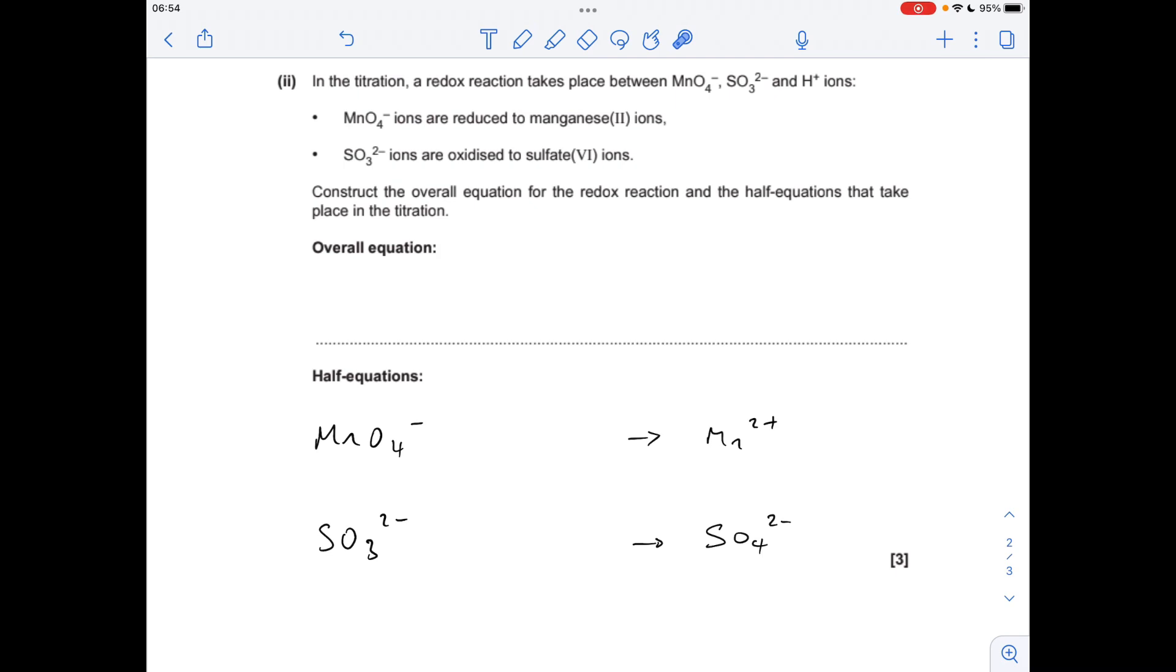And then to turn these into half-equations, because they're in acidic conditions, I'll do them in this order. So I'll look at the atoms first. So Mn, that's fine. We've got four O's there but we haven't got any O's here, so I need four H2O's. That's introduced hydrogen, so I'm going to use the H+ ions from the acidic conditions to balance the hydrogens.